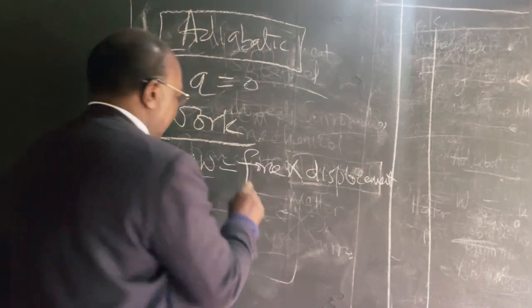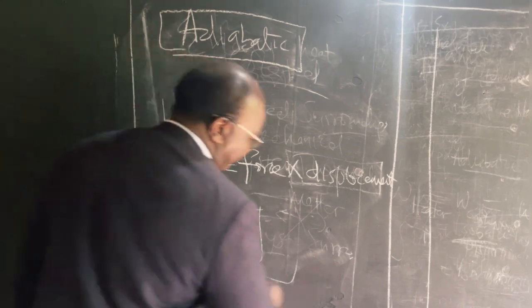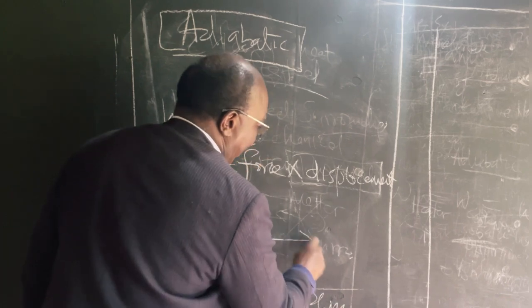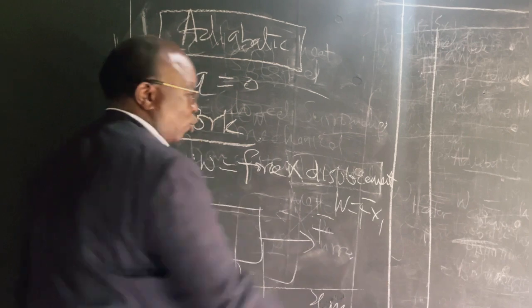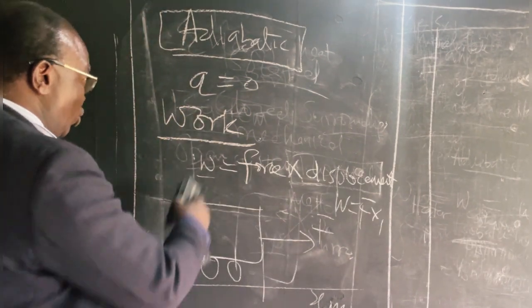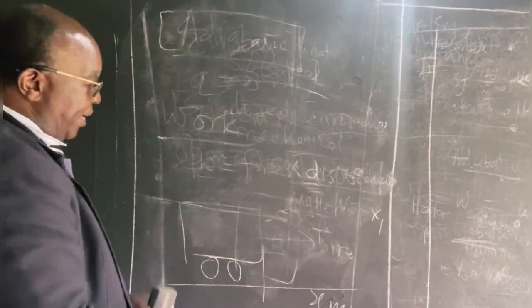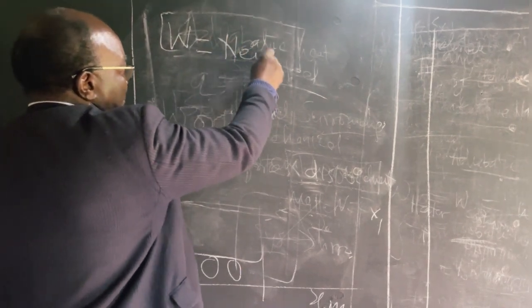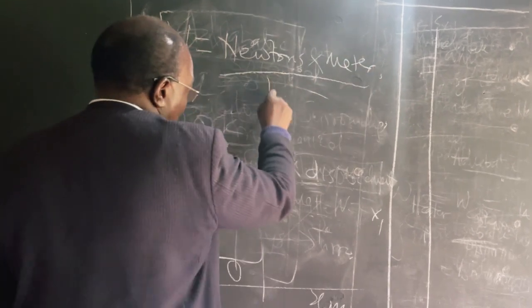So that if you have, for example, a trolley, and this trolley you want to drag it through some distance x1 meters, and you are applying a force F, then the work is F times x1. So it's force times displacement. And you know that the units of force, it's normally newtons, and the units of displacement will be in meters, so that work is basically newtons times meter. And it's a newton meter.